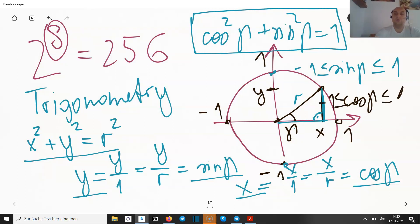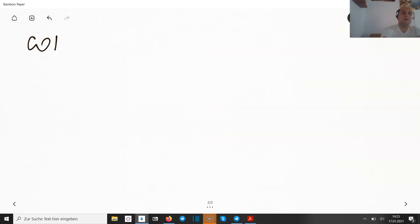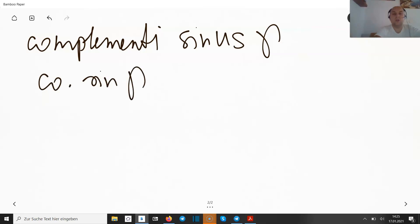By the way, the word cosine was actually, the meaning of this is complementi sinus of gamma. And complementi means added value. Like this is the added curve. Okay. It's way too long to write it down. So that's why we shortcut it or the mathematicians shortcut it to cosine of gamma. And this is where cosine is coming from. All right.